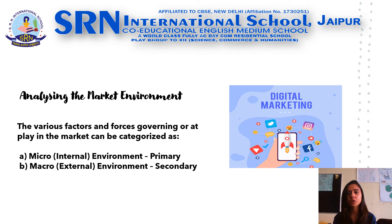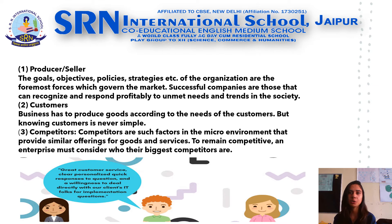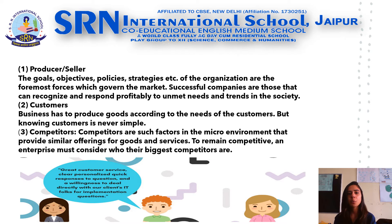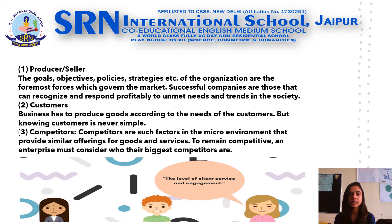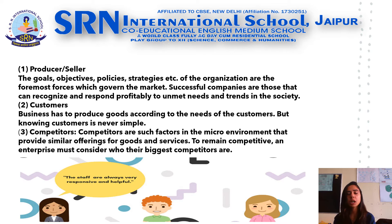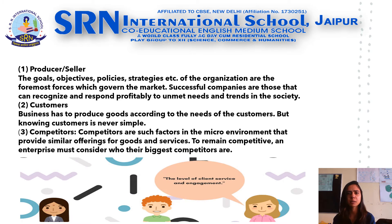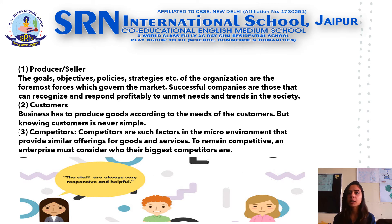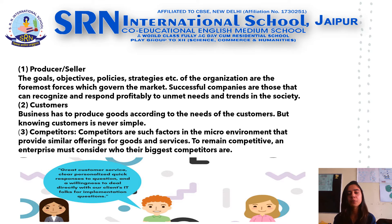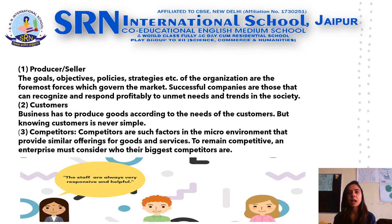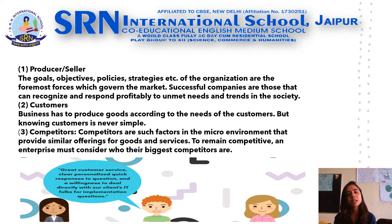It comprises of the following features. Firstly, we have producer or seller. The goals, objectives, policies, and strategies of the organizations are the foremost features which govern the market. Successful companies are those that can recognize and respond profitably to the unmet needs, demands, or trends of society. These enterprises rule the market — they keep themselves aware of market needs and trends, give the market a solution for unmet needs, and identify opportunities and threats in the environment.